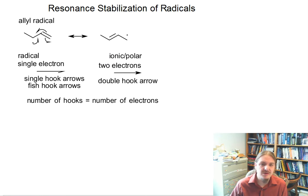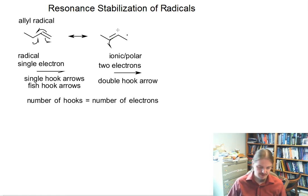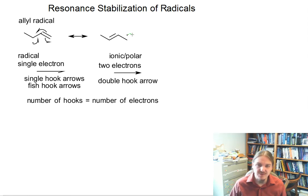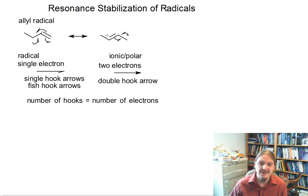We can likewise draw arrows to get back to the original structure. We take our radical — this radical is going to be one electron out of two that is being used to form the pi bond. The other part of that pi bond is going to be one electron in the shown pi bond, and then the other electron in that pi bond is going to become the unpaired electron on the other carbon atom.